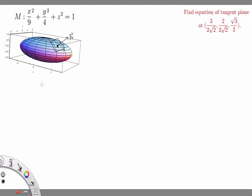Specifically, down the road we want to do surface integrals. So instead, we're going to parameterize our surface. R of U, V is the parameterization. And because it's a surface, it's essentially a two-dimensional object inside of R3, so we need these two parameters, U and V.